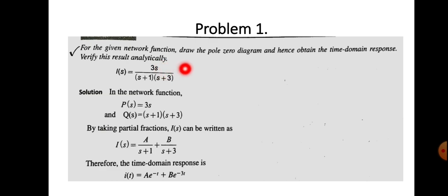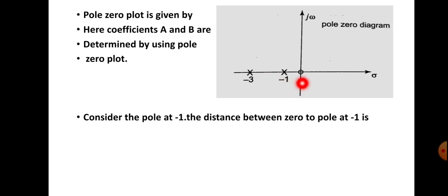The poles are the roots of the denominator polynomial. There are two poles: one at s = -1 and another at s = -3. So there is one zero at s = 0 and two poles at s = -1 and s = -3. In the pole-zero diagram, zeros are marked by circles at the origin and poles are marked as cross symbols at s = -1 and s = -3.